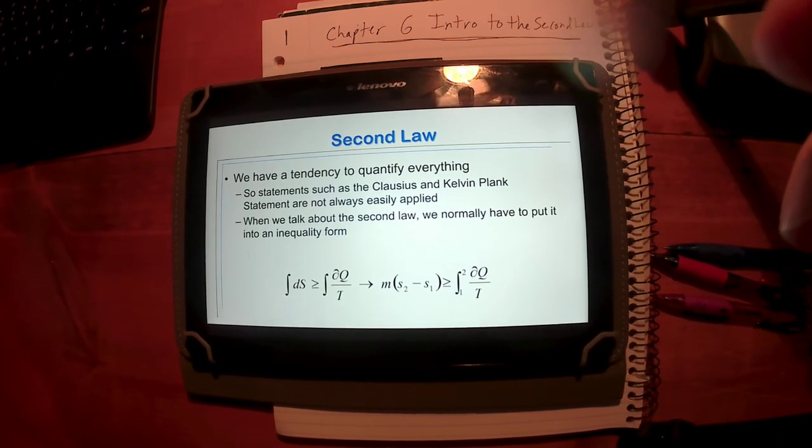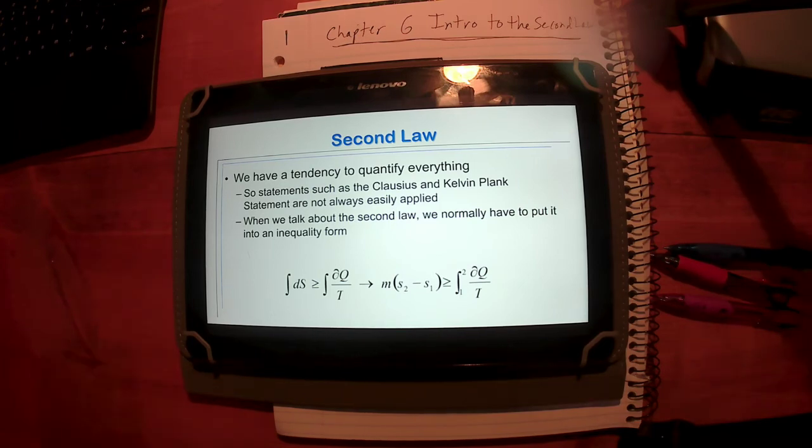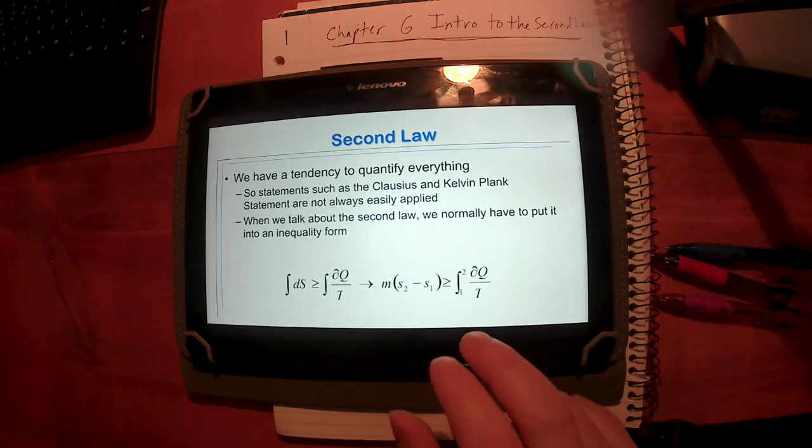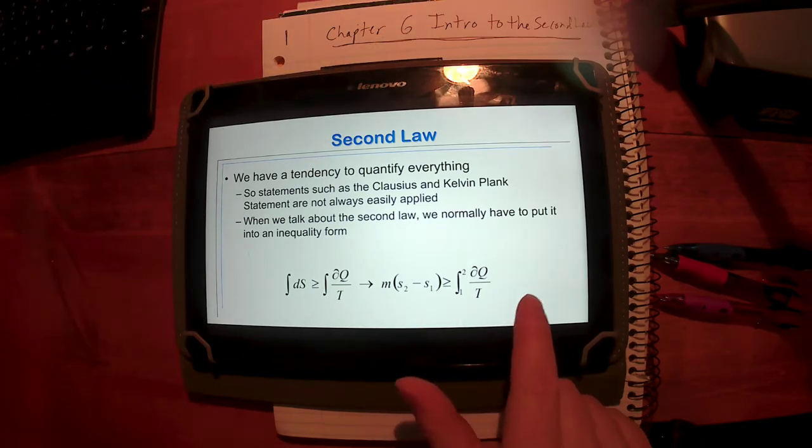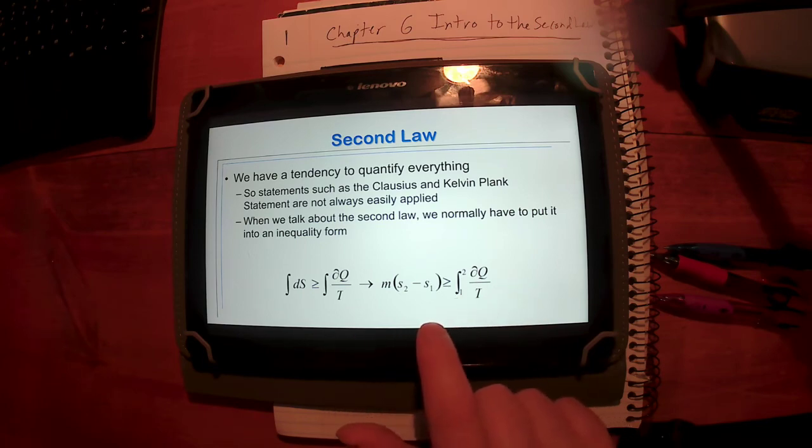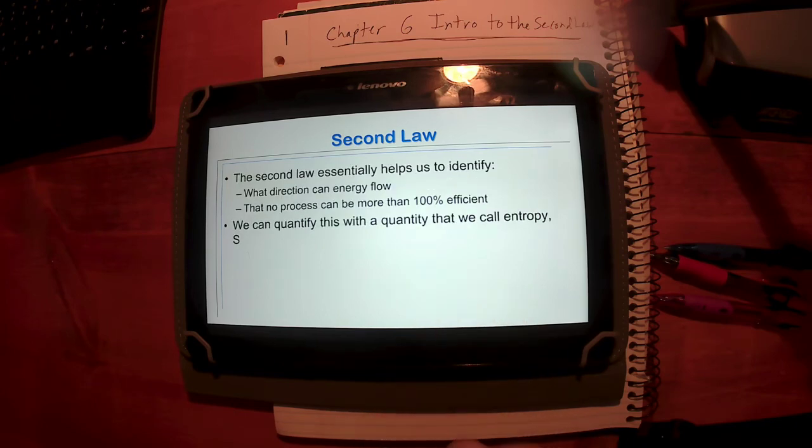Don't worry too much about this. In the next chapter for us, that's chapter seven, we're going to talk about entropy and quantifying it, actually talk about using this law. For us, this is an intro to the second law. I mean, again, I don't even think in your textbook in chapter six they show you the second law. I like to at least show you and say here's where we're headed. What the second law does is it helps us identify direction that energy can flow, especially heat, really deals with heat. What direction can heat flow and how much can you push heat in the opposite direction? And again, it's an inequality.